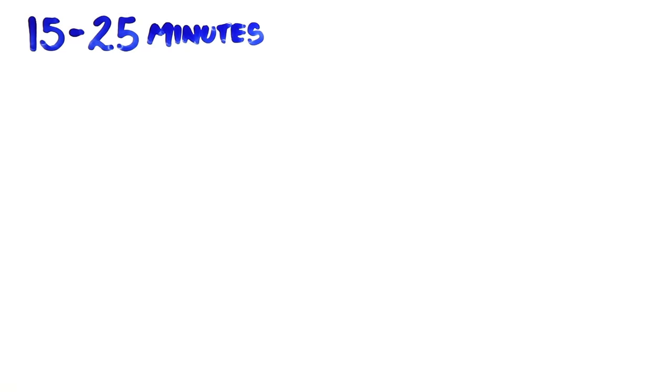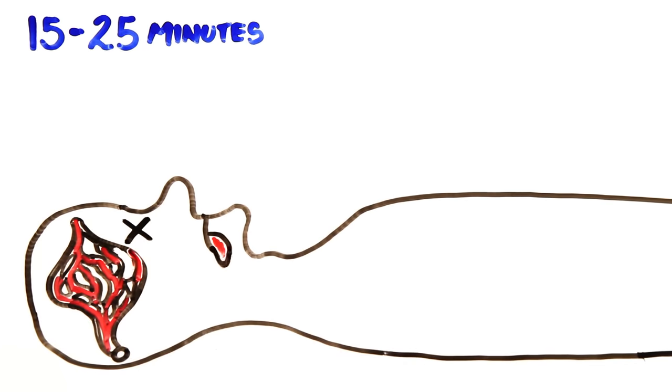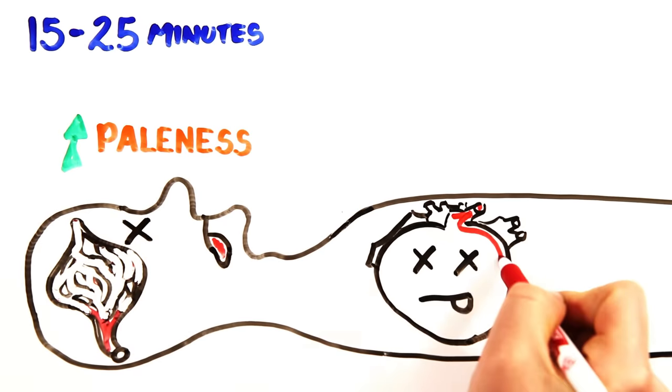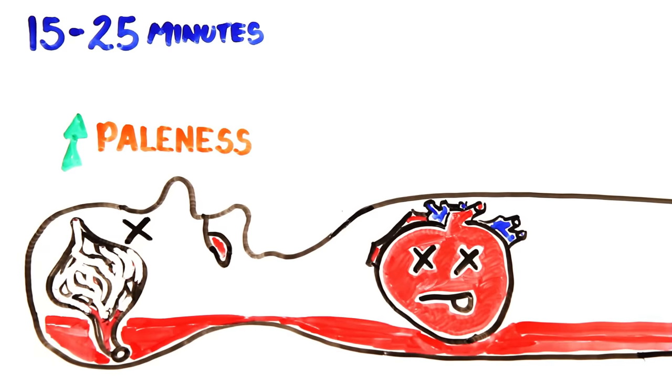Around 15 to 25 minutes after death, the lack of blood flow through the capillaries leads to the paleness of death seen in light-skinned people. Because your heart is no longer running, there's no active propulsion of blood through the body, so gravity begins to cause pooling of blood in the lowest parts of the body.